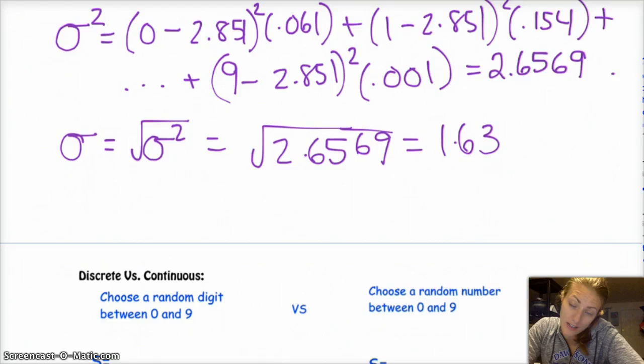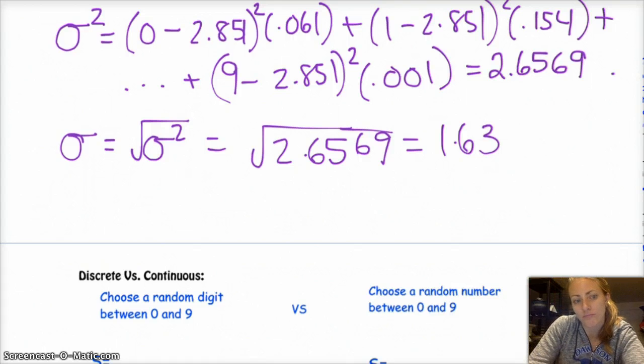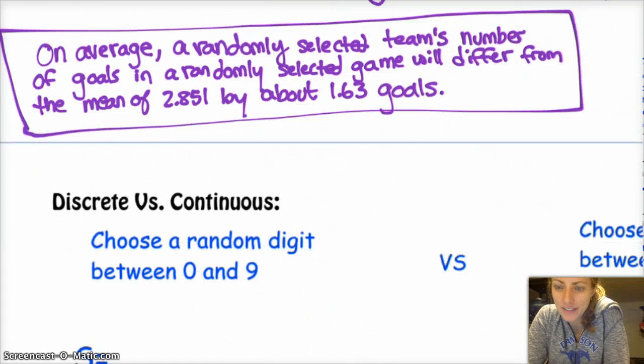And then it says to interpret in context of a problem. Remember we're talking about goals in an NHL game. So you might say something like, on average a randomly selected team's number of goals in a randomly selected game will differ from the mean by about 1.63 goals. And there you have it.